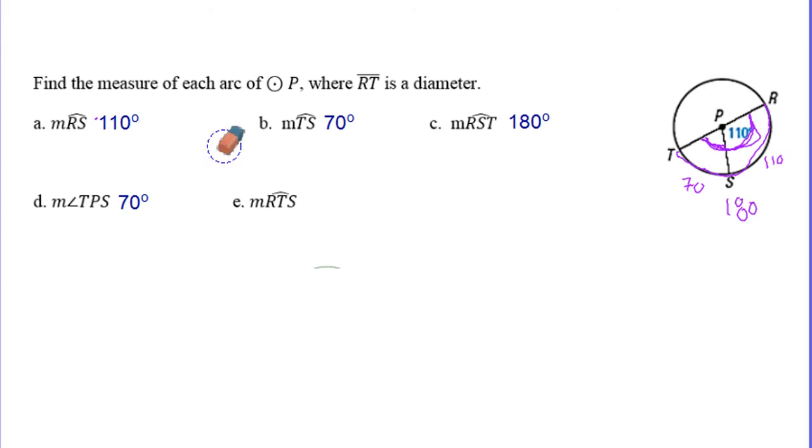The final piece is asking for arc RTS. Arc RTS goes here to T to S, so it's this whole piece here. We know from earlier that this is 70. R to T is a semicircle as well, so that's 180 degrees. To find RTS, you're just going to add these two numbers together, and that's going to give you 250 degrees. That's how you use those central angles and the different arc types to solve problems.